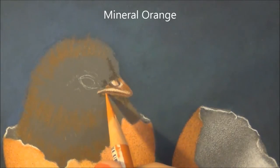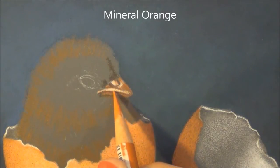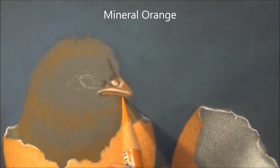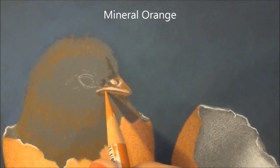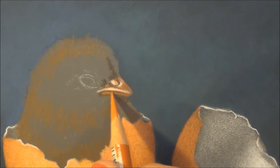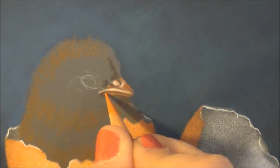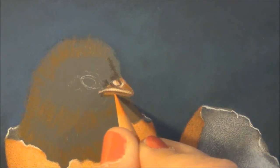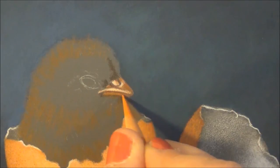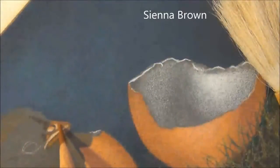This is Mineral Orange. Down here, underneath, in between that sepia, you have two sections of sepia, here and here. In between, you're going to place, and you're going to do it in a circular motion, your Mineral Orange.